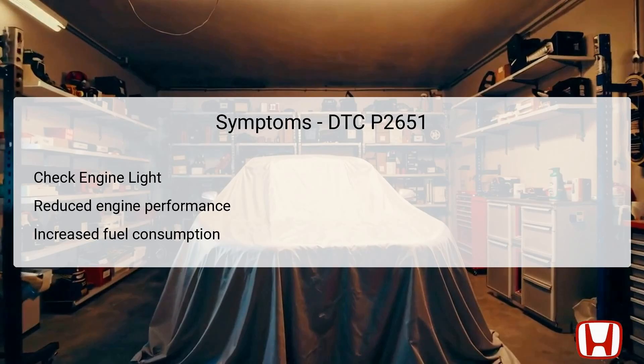Symptoms of DTC P2651 may broadly affect vehicle operation, with some of the most notable being the illumination of the check engine light. When DTC P2651 is set, the PCM detects a fault within the rocker arm oil pressure system, prompting the CEL to alert the driver. Furthermore, reduced engine efficiency is likely, especially during acceleration and while driving under load. Due to improper function of the VCM, this could manifest as sluggish performance or unresponsiveness while the vehicle is in motion, something essential to notice particularly during highway driving or while attempting to accelerate quickly.